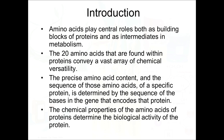The amino acid content and sequence of a specific protein is determined by the sequence of bases in the genes that encode that protein — this is the genetic code. Genes contain information that enables the cell to form specific proteins through the processes of transcription and translation.